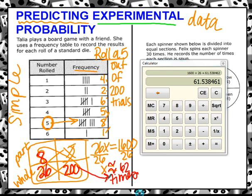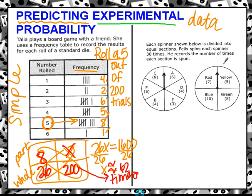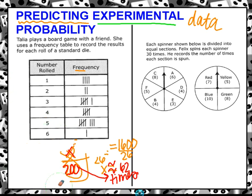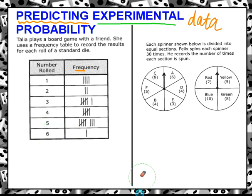So again, we found the probability just like we normally would, and then we set up a proportion to figure out how many times out of 200 that it could possibly happen. Let's go ahead and look over here because we are going to have to do this with compound events. Let me get rid of all this junk over here so it's not clogging up our screen.